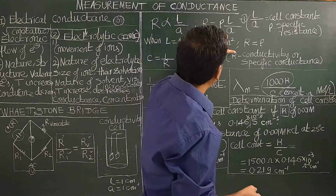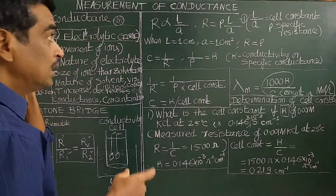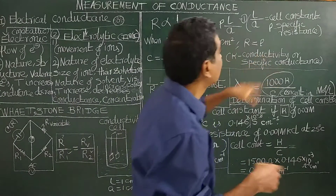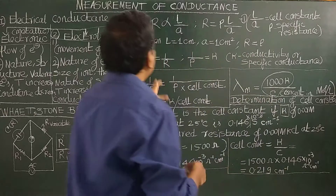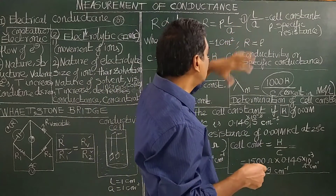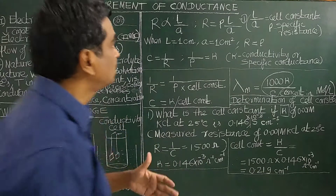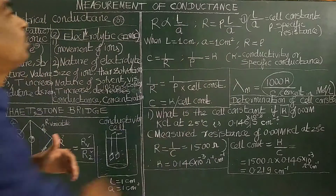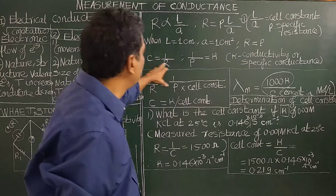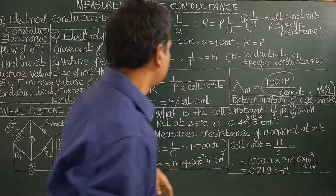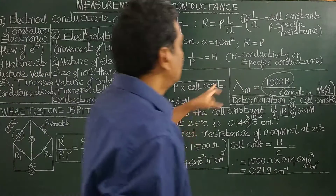The resistance of a conductor is directly proportional to its length and inversely proportional to the area of cross-section. So R = ρ × (l/A), where ρ is the specific resistance or resistivity. In the CBSE book they call it conductivity. The ratio l/A equals the cell constant, and ρ equals specific resistance. When l = 1 and A = 1 cm², then R = ρ. The conductance G = 1/R, and 1/ρ = κ (kappa), which is the specific conductance or conductivity.